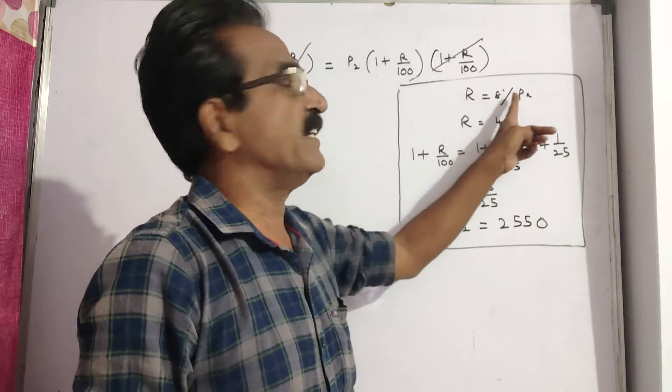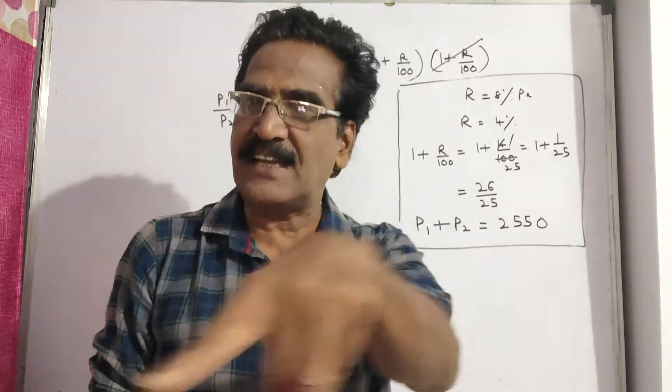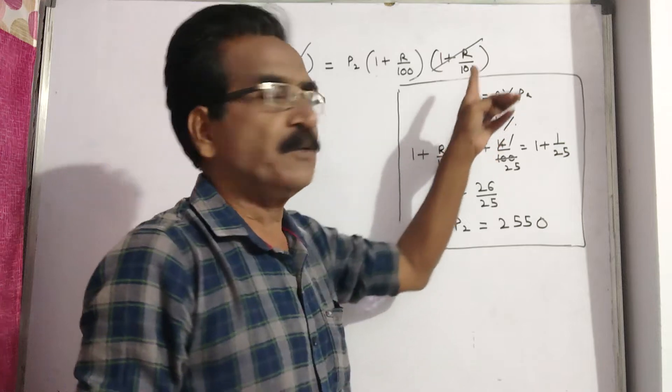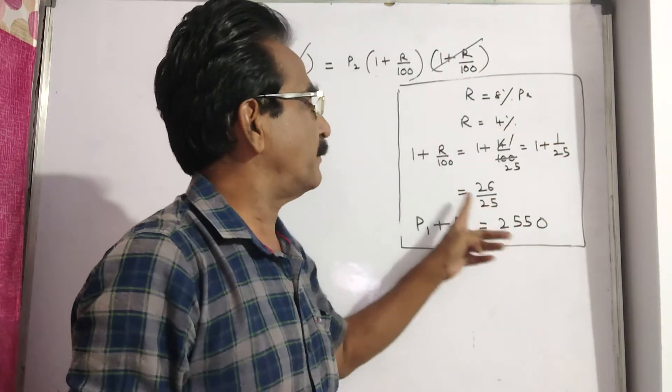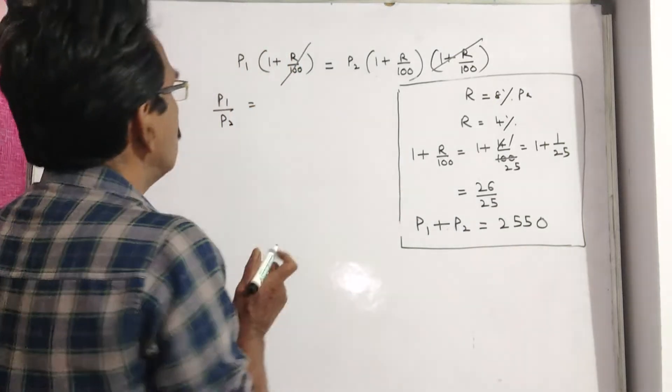Friends, R is given 8% per annum. But since this is half yearly compounded, R equals 8 by 2, that is 4%. Accordingly, 1 plus R by 100 equals 26 by 25.